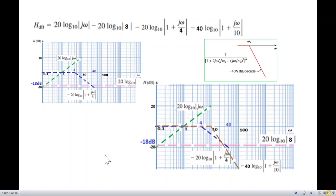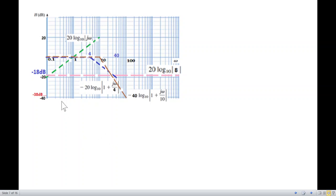So this is the total plot. The final answer: we start from 0, then we have minus 18, the constant. We have to add the terms. At omega equals 4 we have minus 38. The slope changes at this point because one term adds a minus 20 dB per decade slope.